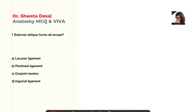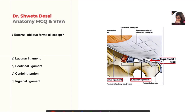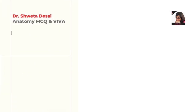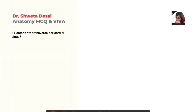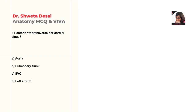Next: external oblique forms all except — lacunar ligament, pectineal ligament, conjoint tendon, or inguinal ligament? The correct answer is C, conjoint tendon. The conjoint tendon is formed by the fusion of the internal oblique and transversus abdominis muscle.